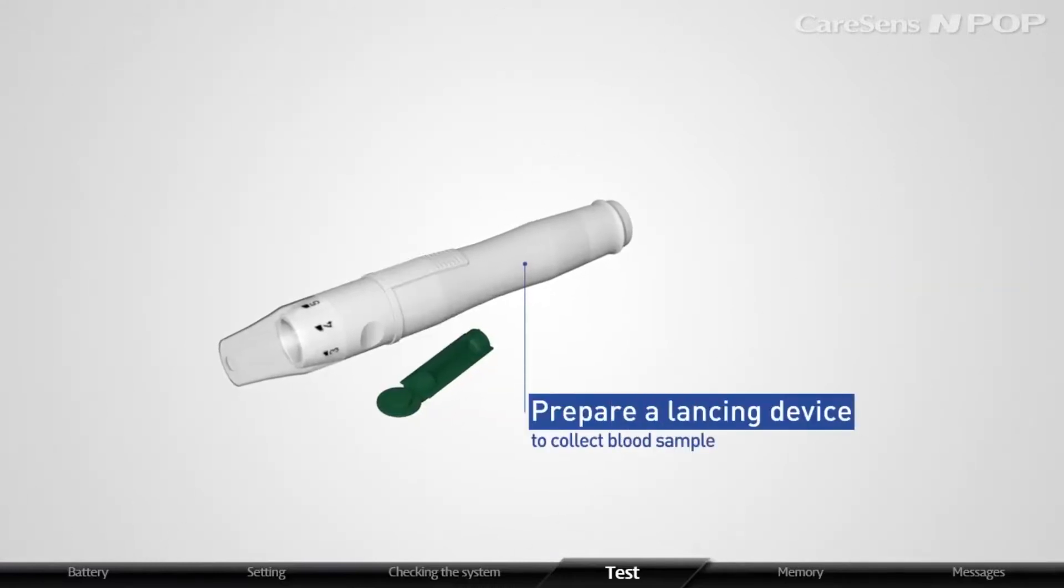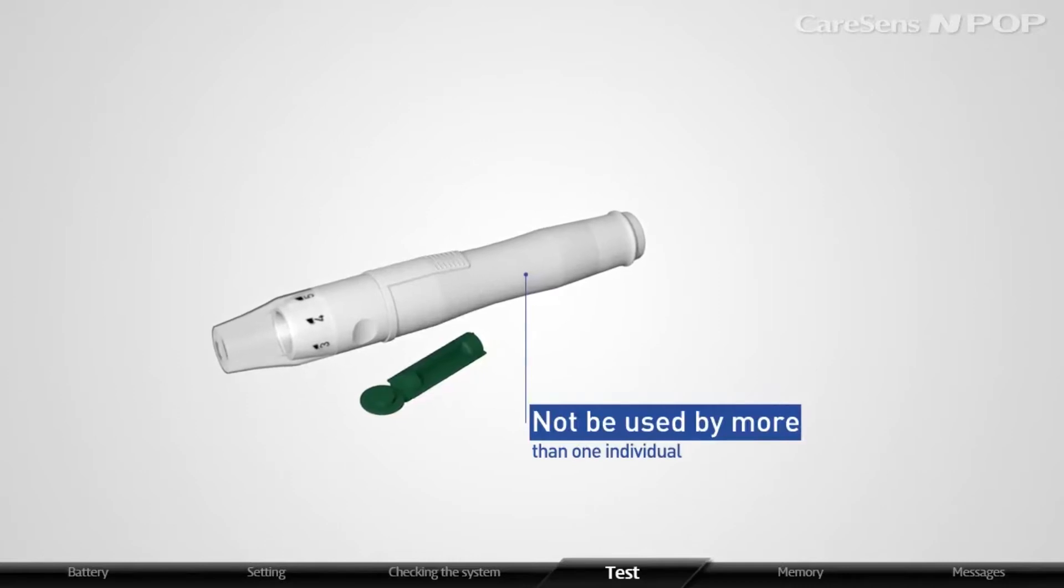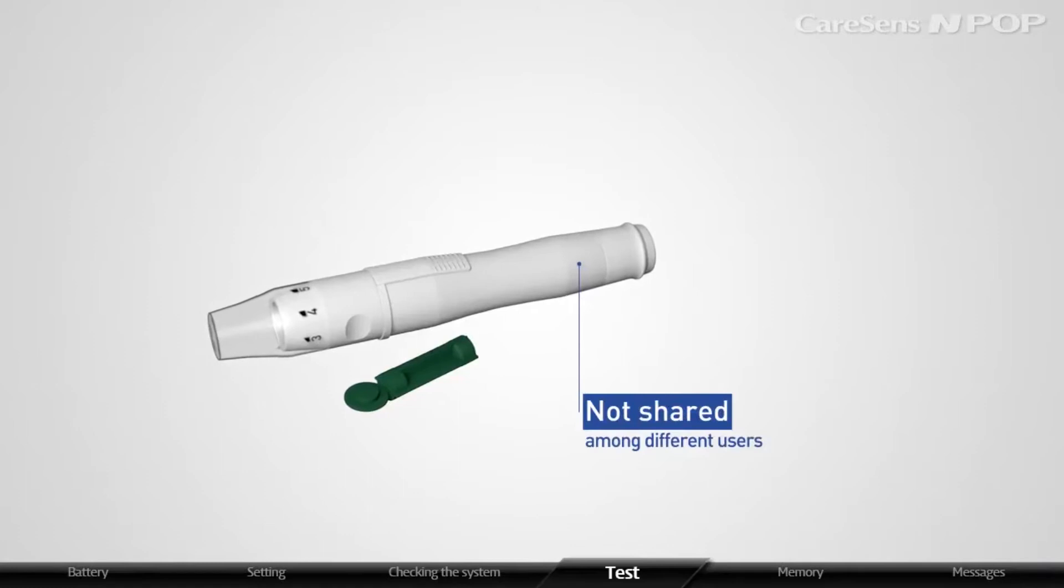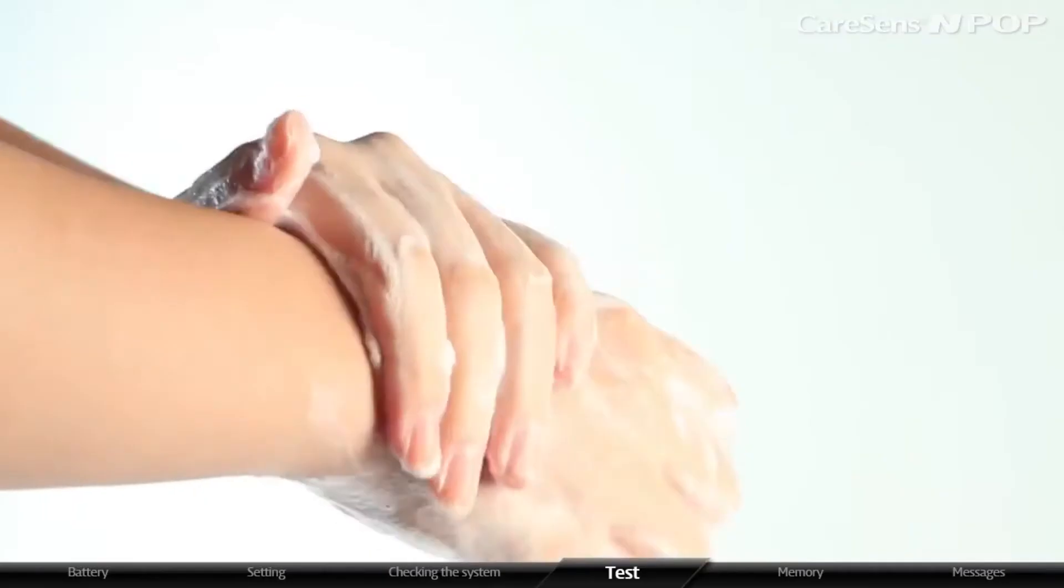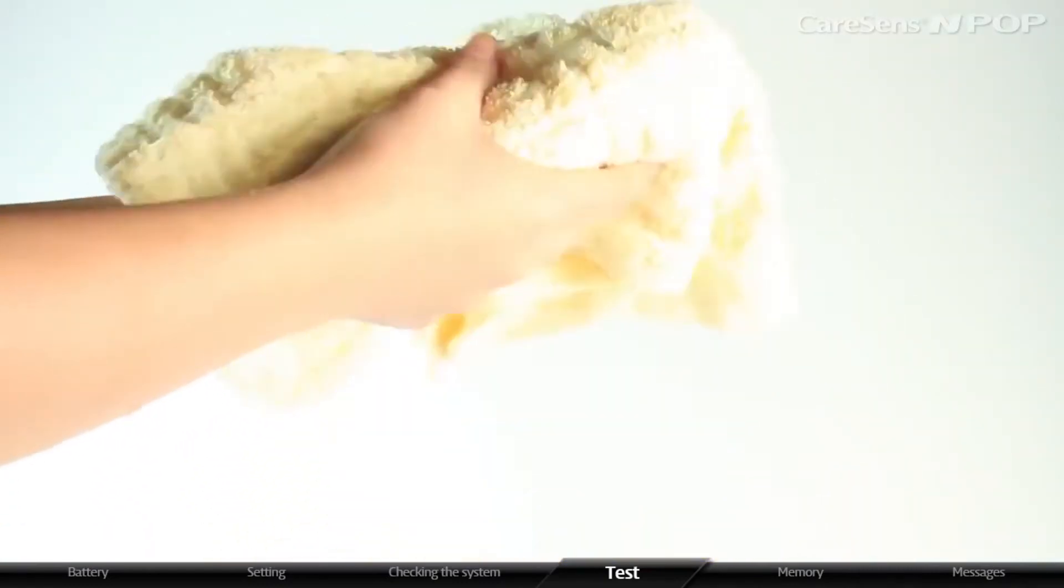Prepare a lancing device to collect blood sample. The lancing device may not be used by more than one individual. Ensure the lancing device is not shared among different users. Thoroughly wash and dry your hand and the testing site with water and soap.